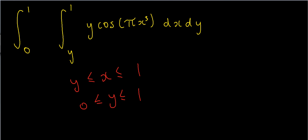Well what happens if I'm physically trying to do this integral as it is? I've got to integrate with respect to x first, so no matter what happens I've got to integrate y cosine pi x cubed with respect to x. Now notice that that's actually impossible. In fact, we can't integrate something like cosine of x squared — that's called a Fresnel integral. So this integral actually doesn't exist in terms of elementary functions; you can't find an anti-derivative that will give you cosine pi x cubed.